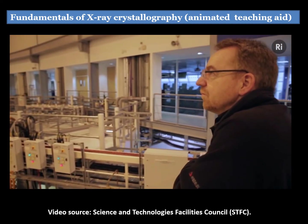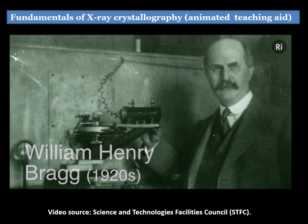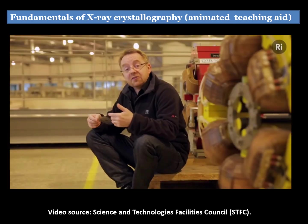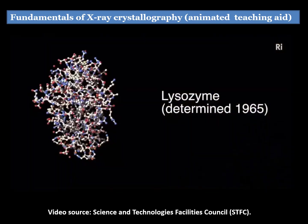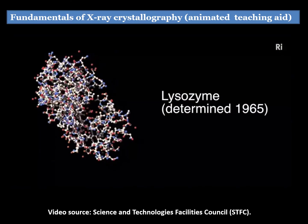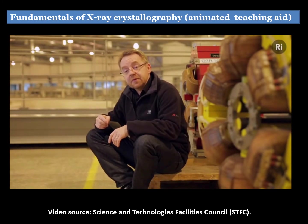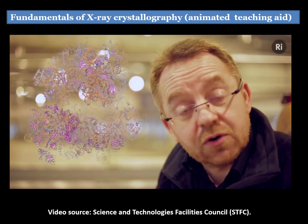X-ray crystallography isn't a particularly new technique — in fact, it's been around for about a century. In the early days, crystallographers used simpler X-ray generators and photographic plates to record their diffraction patterns. Back then, X-ray generators were much weaker, limiting the technique to larger crystals from smaller and simpler protein molecules, and it could take hours or days to record all the diffraction patterns needed. But today, with synchrotrons as powerful as Diamond, we can use much smaller crystals, down to only five-thousandths of a millimeter in size.